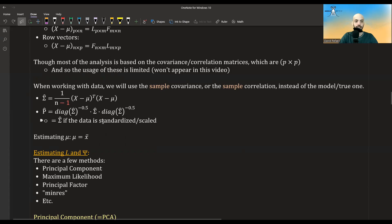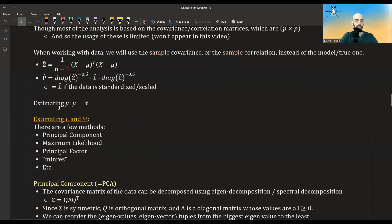And notice that if the data is already standardized or scaled, this is actually equal to the covariance matrix. So there's no need of doing this because here the diagonal values will be 1, the inverse of them will be 1, and so these matrices make no difference.